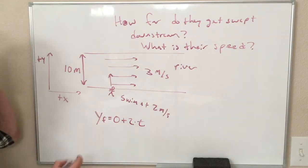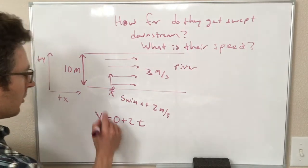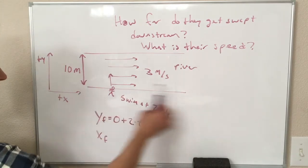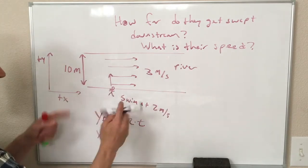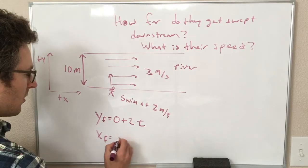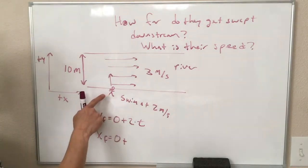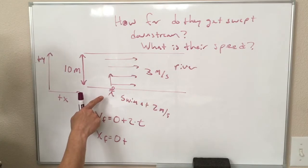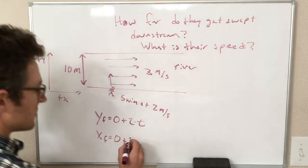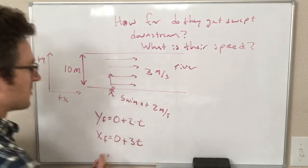Their x position, we'll also call this the 0 of our x axis here too. So they're starting at x equals 0,